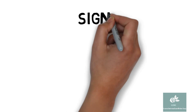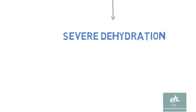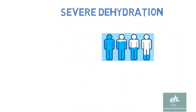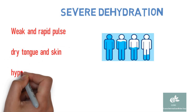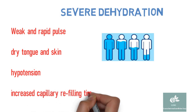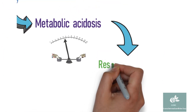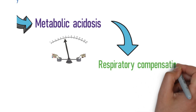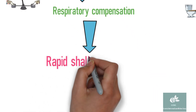Physical findings in DKA: increased water loss due to polyuria results in severe dehydration. Signs of dehydration include weak and rapid pulse, dry tongue and dry skin, hypotension, and increased capillary refill time. Respiratory compensation for metabolic acidosis results in Kussmaul respiration — that is, rapid and deep breathing.